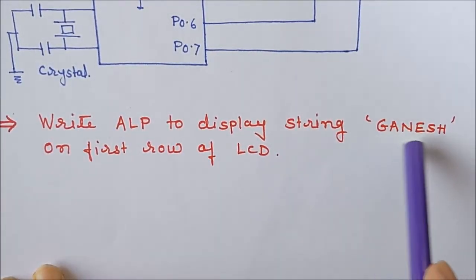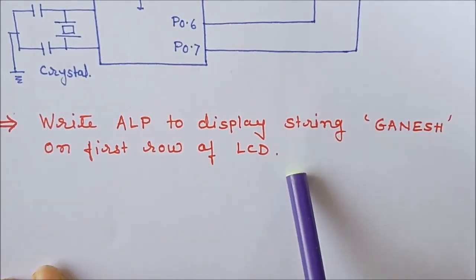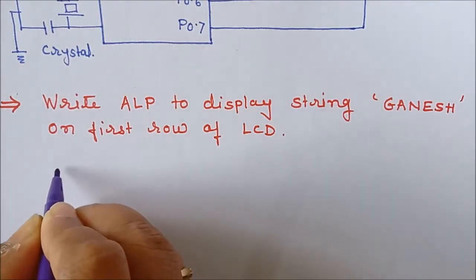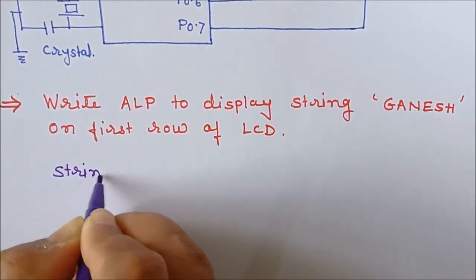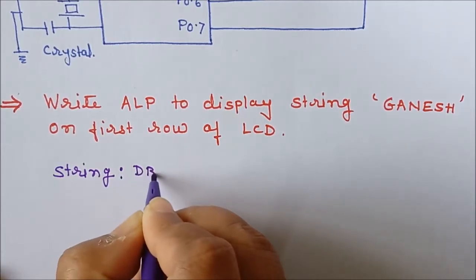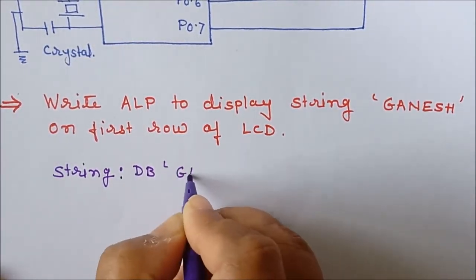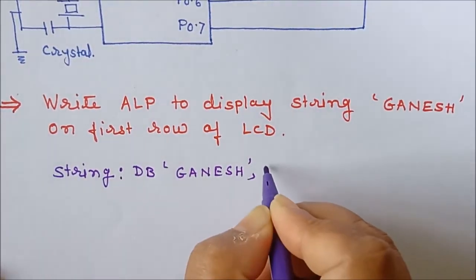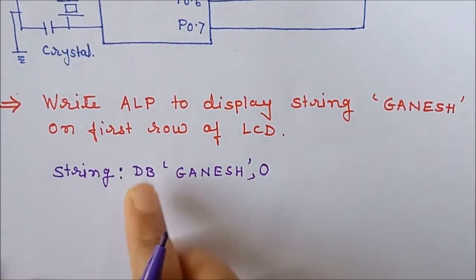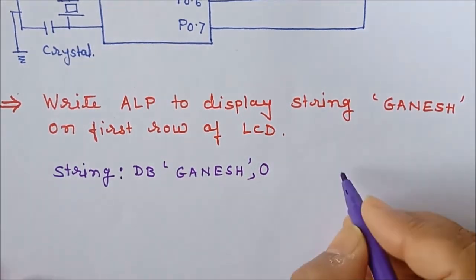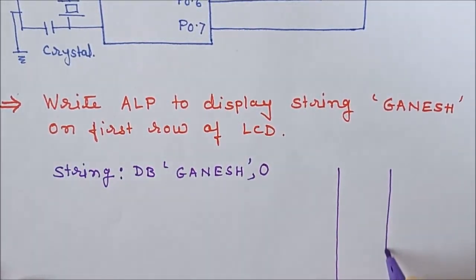The program statement is: write an ALP program to display the string 'Ganesh' on the first row of the LCD. To write the program we will use the lookup table concept. To store data in a lookup table, we give a name to the string, then a colon, then DB, and in single quotes we write the string we want to display, which is 'Ganesh', followed by a zero to indicate the end of the string. DB stores the 8-bit ASCII value of each character in memory.